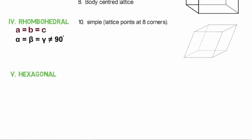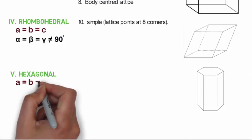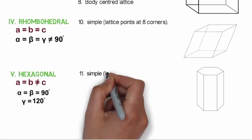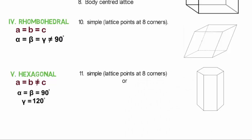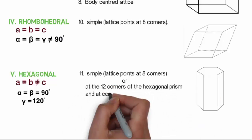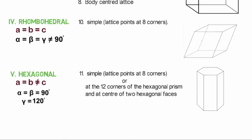The next one is hexagonal, where A equals B but not equal to C. Alpha equals beta equals 90 degrees, whereas the gamma angle equals 120 degrees. The only possible lattice is simple cubic, in which lattice points are at the 12 corners of the hexagonal prism and at the center of two hexagonal faces.